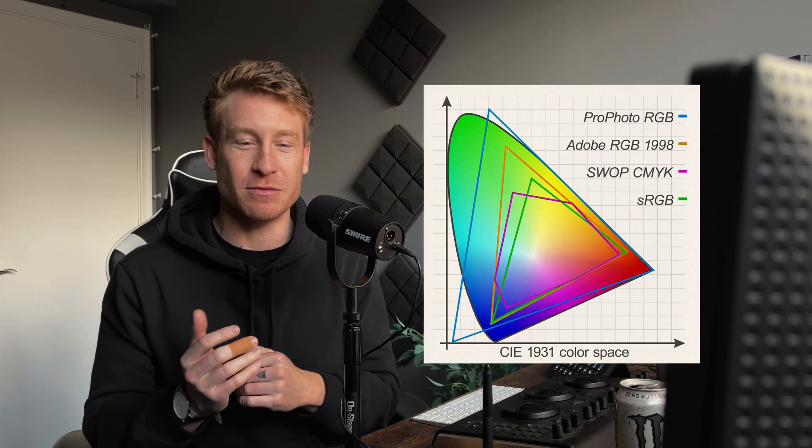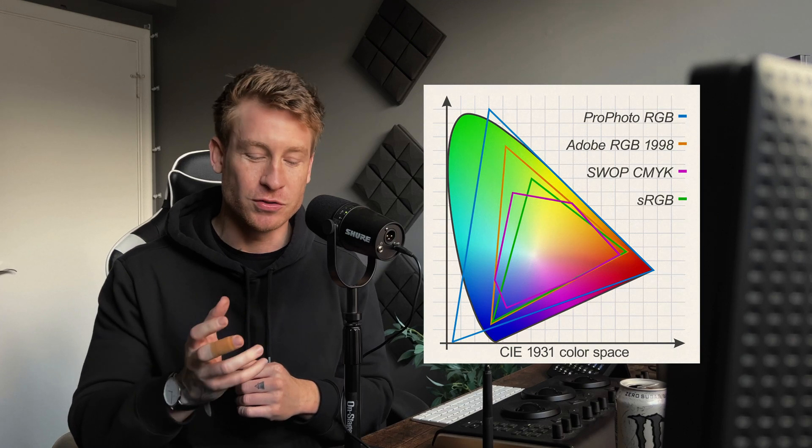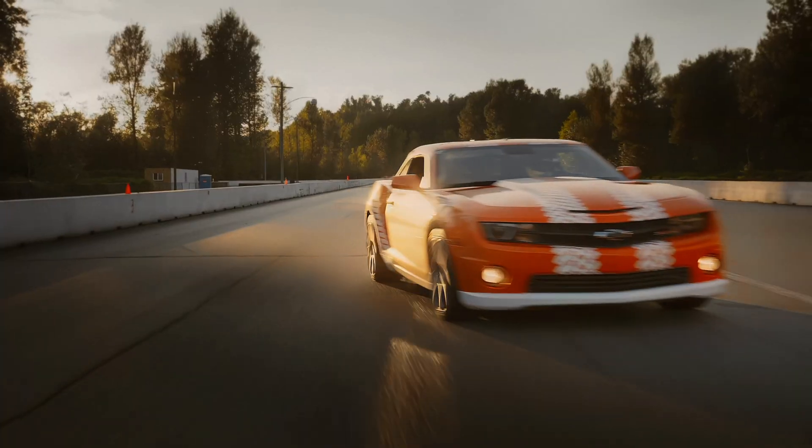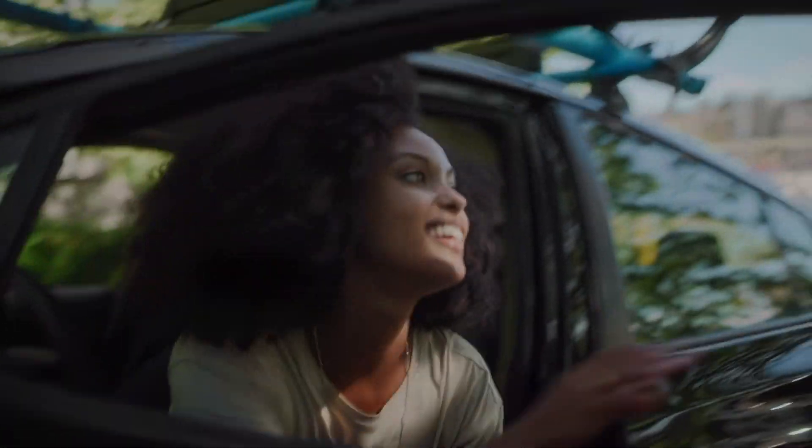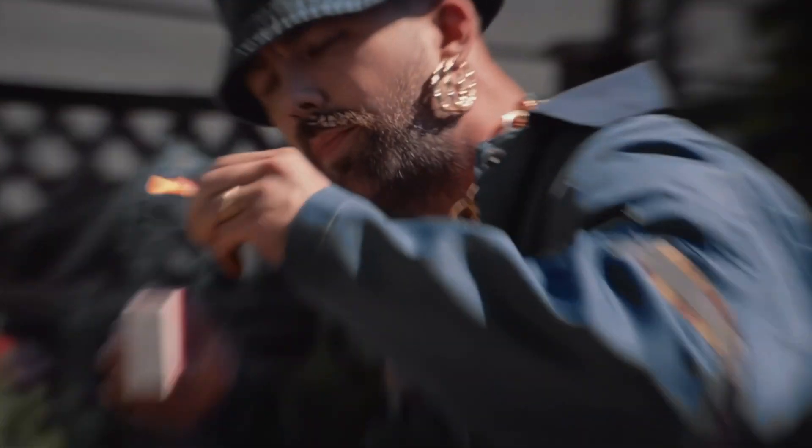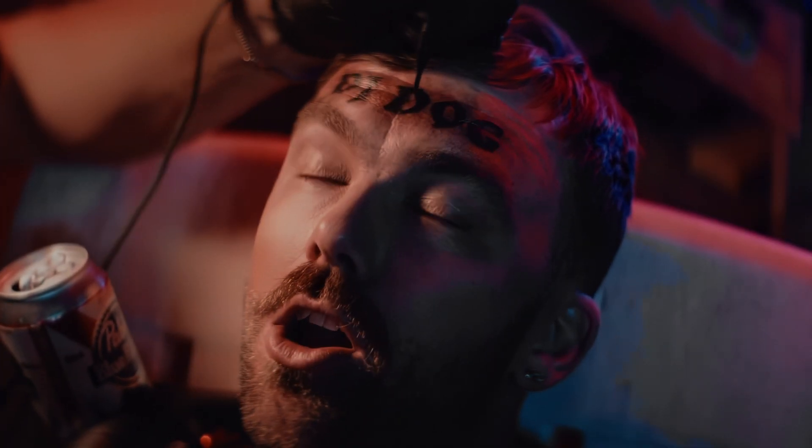I'm going to try and explain what color spaces are and how to use them in the easiest way possible, using an example of food. So imagine you have a plate in front of you and imagine you have an oven the same size as the plate. In this oven you can only put a chicken and a potato. You cook the food, it's ready, and you put the food on the plate — just the chicken and the potato, that's the only stuff that can fit in the oven.